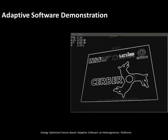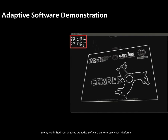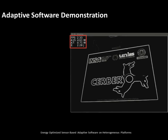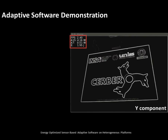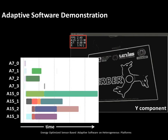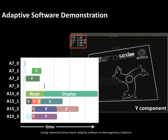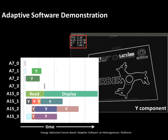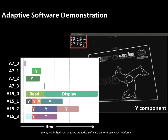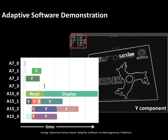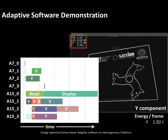We are now seeing the output image generated by the adaptive software. On the top left corner, the number of frames processed per second, the power consumption of the A15 and A7 cores, and the energy consumed per frame are displayed. At the moment, only the Y component of the input image is being processed. Looking at the Gantt diagram generated by Spyder, the read and display actors are the most time-consuming and are both executed on an A15 core. Most other image processing actors are executed in parallel thanks to pipelining. Since the degree of parallelism for processing each component is 4, A15 cores are mainly used for image processing as they are faster and available. The energy consumption in this configuration is on average 1.92 joules per frame.